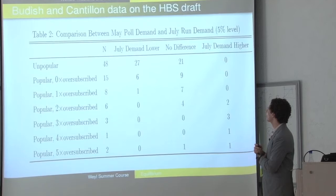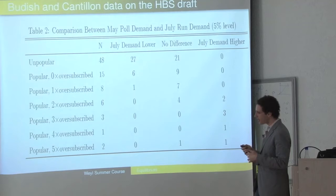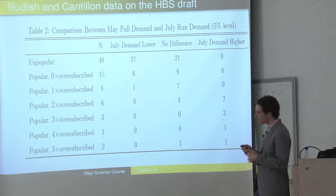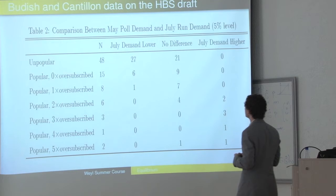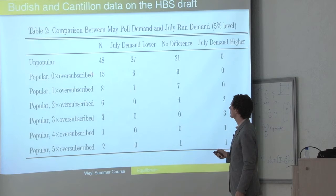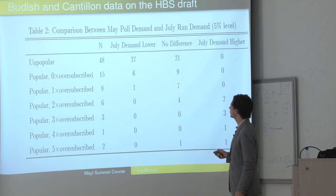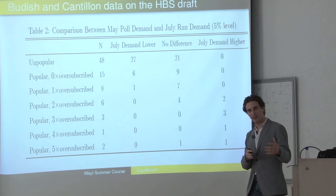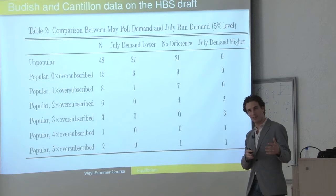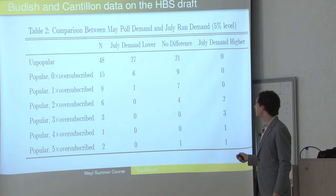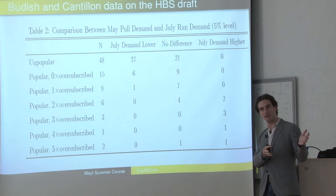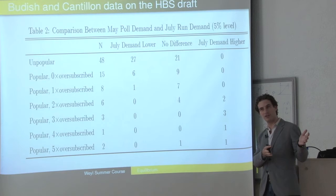Here's the proof that there was a lot of cheating on this system. They asked people to truthfully report preferences in a survey and then had people bid in the system. They found that almost all of the cases where demand was lower in the actual system than in the survey were on very unpopular courses. On the other hand, when people increased their demand in the system relative to the survey, it was almost always in very popular courses.